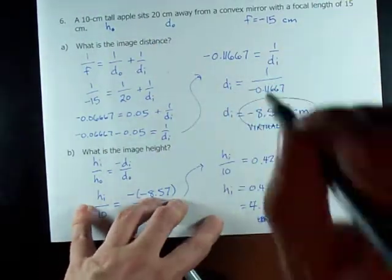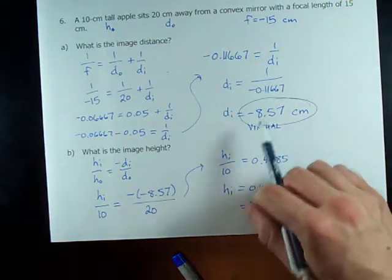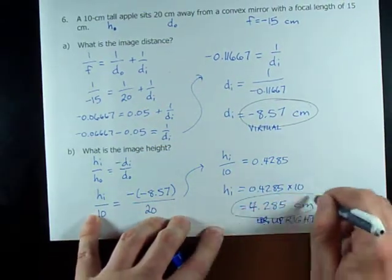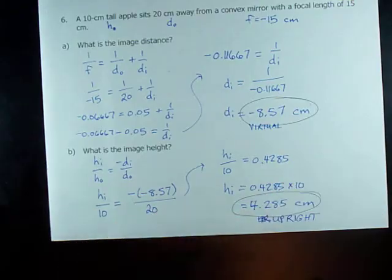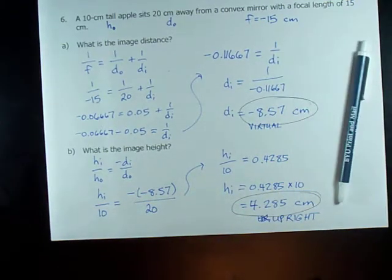So image distance was negative 8.57, virtual. And the image height was 4.285 centimeters, which happened to mean upright. Piece of cake, son.